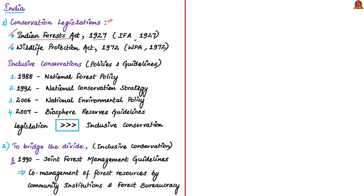From the 1980s there were a number of policies that mirrored the global shift towards inclusive conservation, such as the 1988 National Forest Policy, the 1992 National Conservation Strategy, the National Environmental Policy of 2006 and the 2007 Biosphere Reserves Guidelines. While these people-friendly policy statements made their way into India's conservation lists, the earlier exclusionary conservation legislation — the Indian Forest Act of 1927 and Wildlife Protection Act of 1972 — continued to stay in place and overpowered the inclusive conservation.